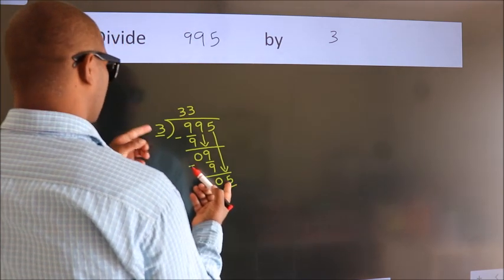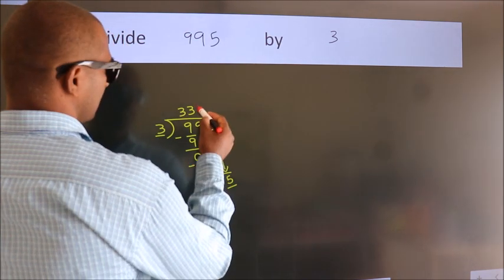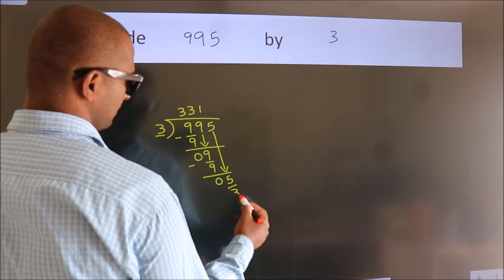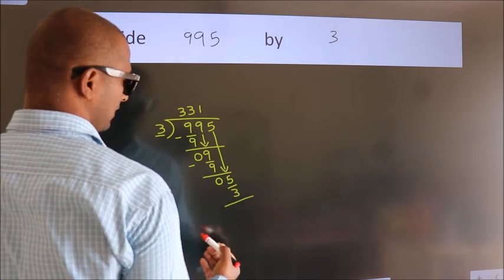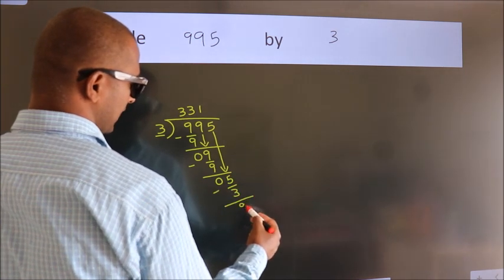A number close to 5 in 3 table is 3 once 3. Now, we subtract. We get 2.